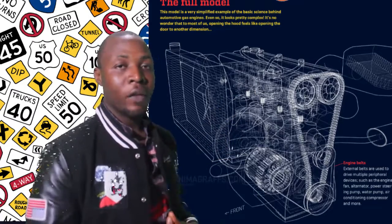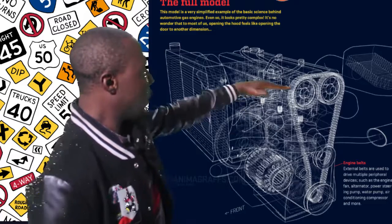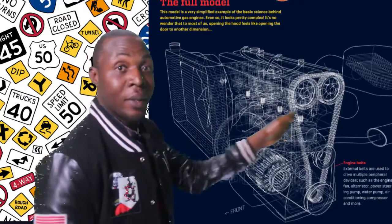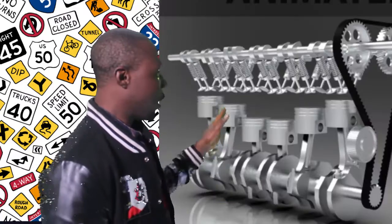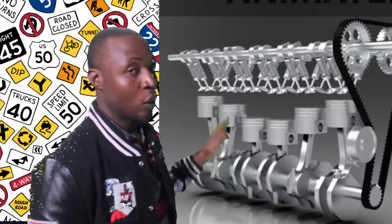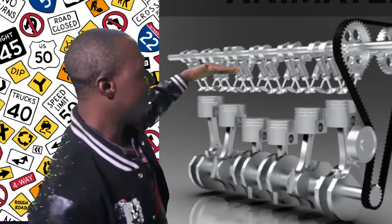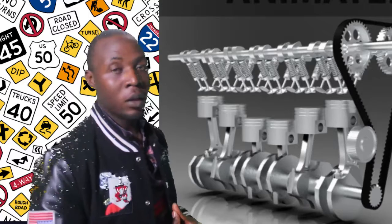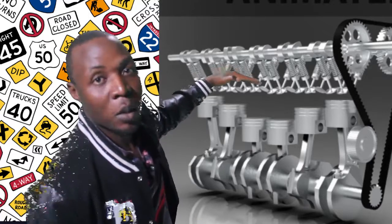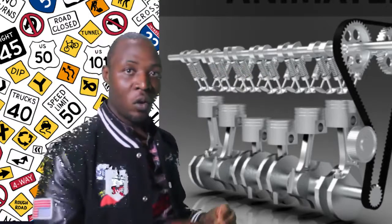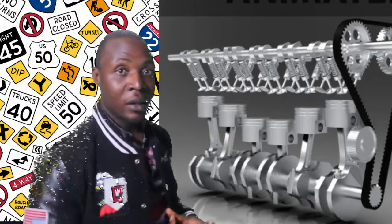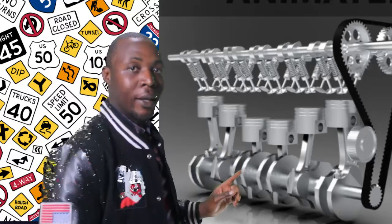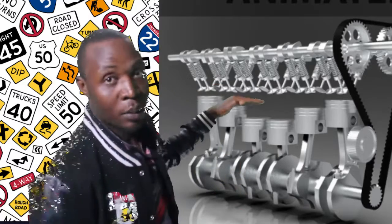So in this other engine, we can see the engine having six pistons — one, two, three, four, five, six. You can count it by yourself. Then we have above the piston what we call valves. If you want to count these valves above here, we have 12. Each piston is connected to two valves — one outlet and one inlet.